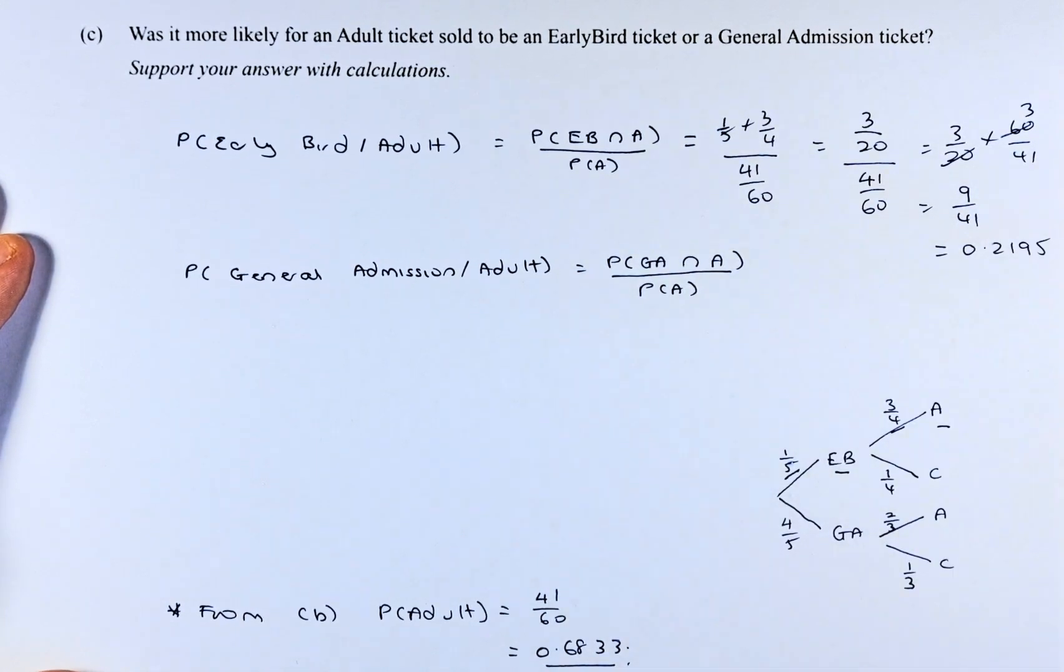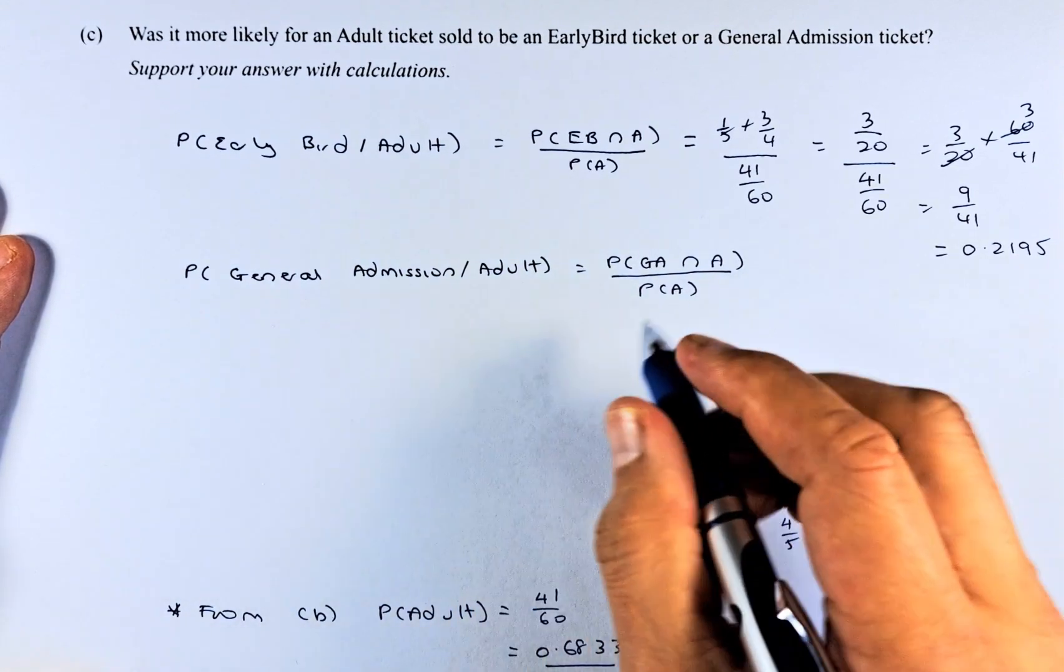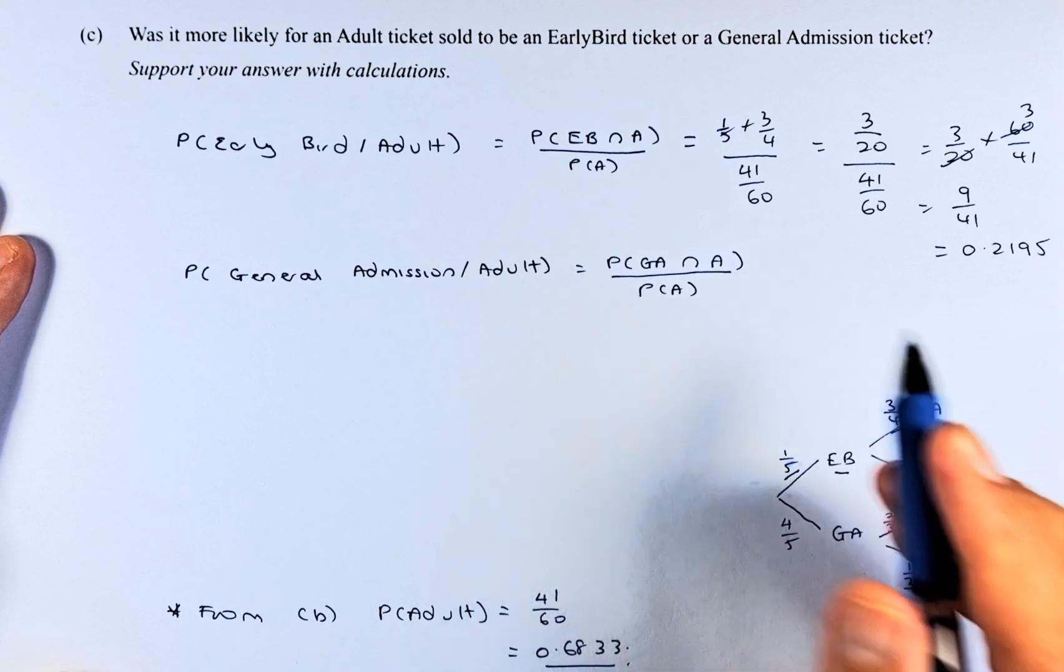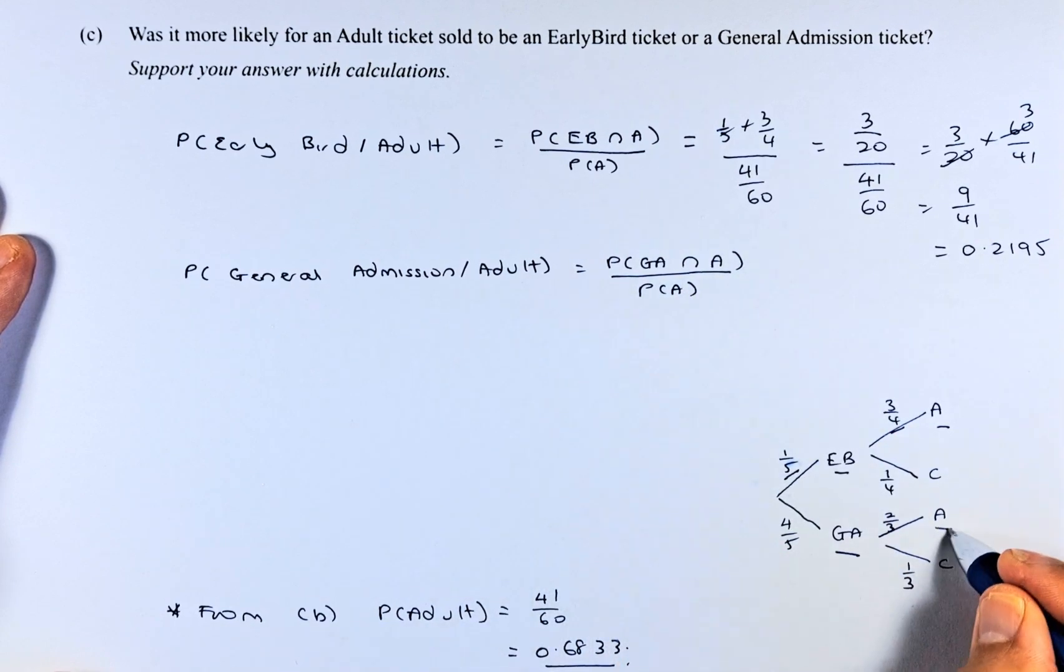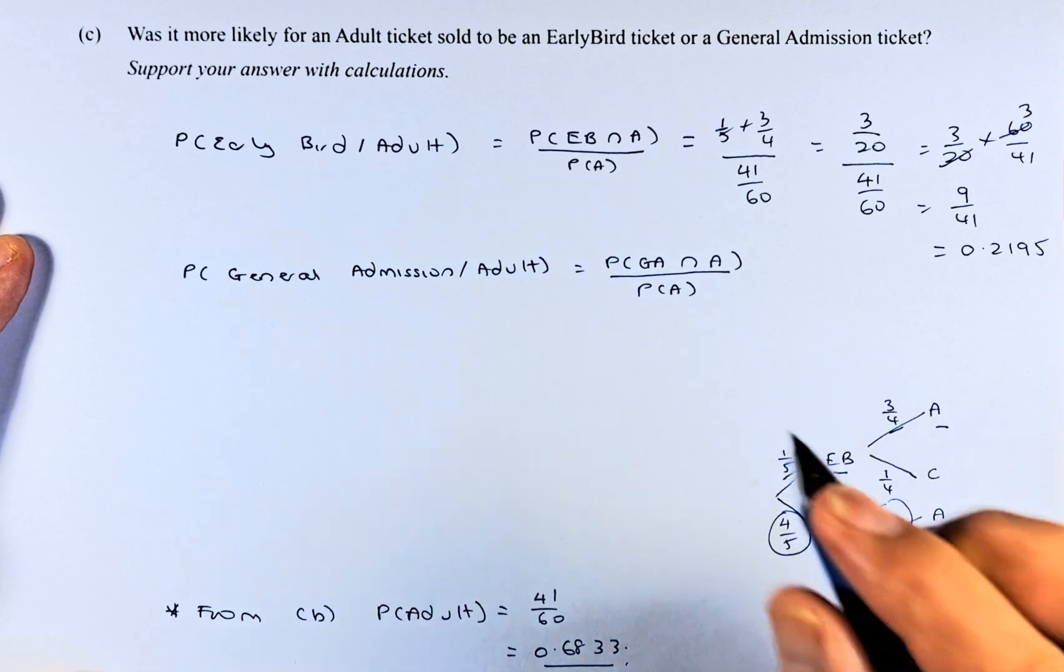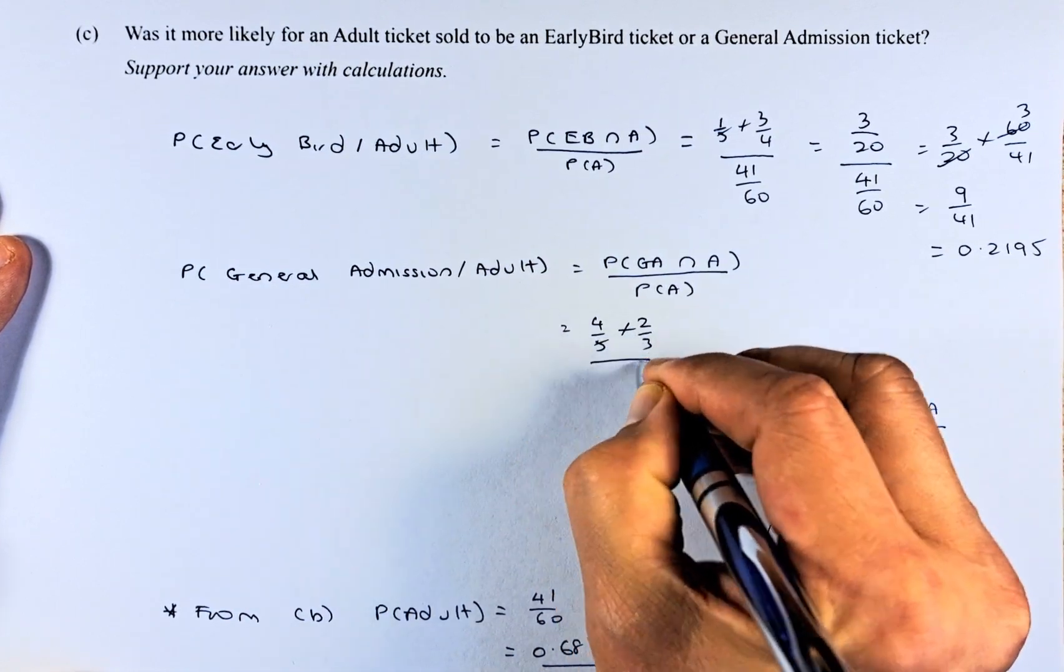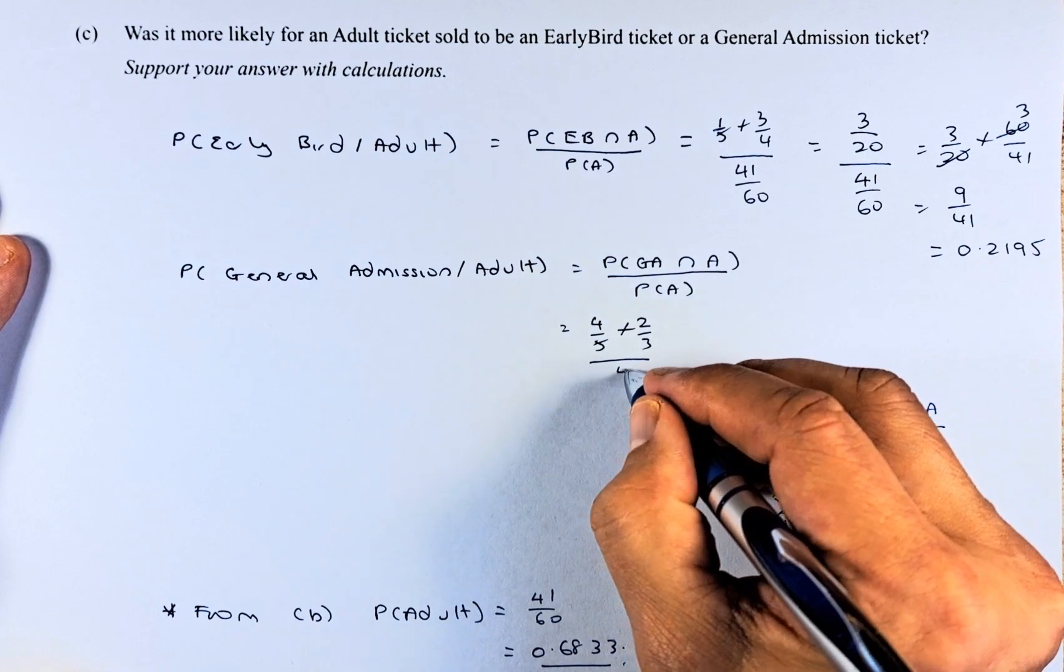We do the same for the probability of general admission given adult. We take the probability of general admission and adult divided by the probability of adult. For general admission and adult, we use 4/5 times 2/3, divided by 41 over 60.